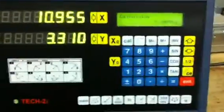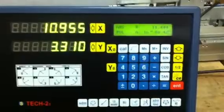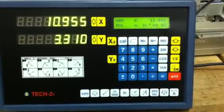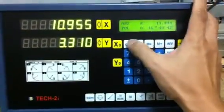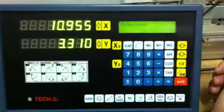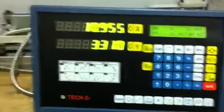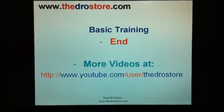To get out of the calculator function, just press the calculator button again. One basic thing to note is that whatever function you want to enter, just press the function key. To exit the function, just press the same button again. Thank you.